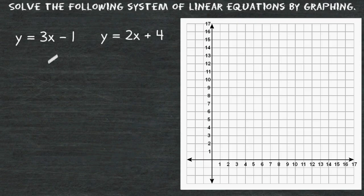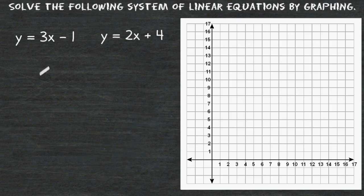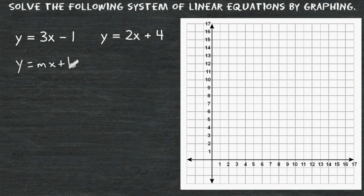Let's graph both of these linear equations. The first thing that we should notice is both equations are in y equals mx plus b form, or slope-intercept form. That form, y equals mx plus b, is a form that already gives us enough information to graph our straight line.